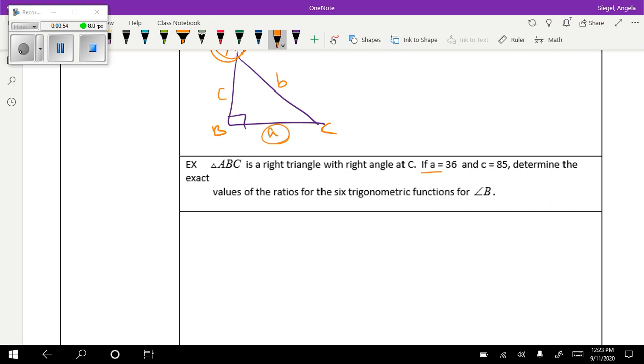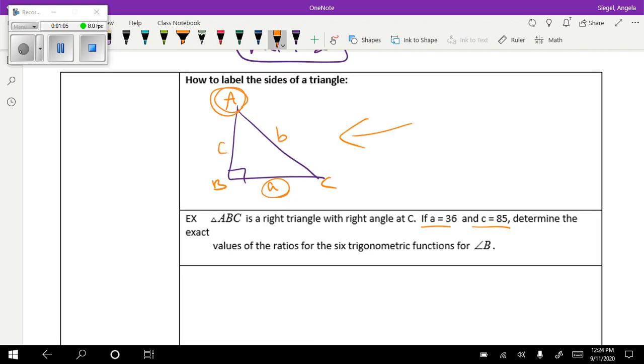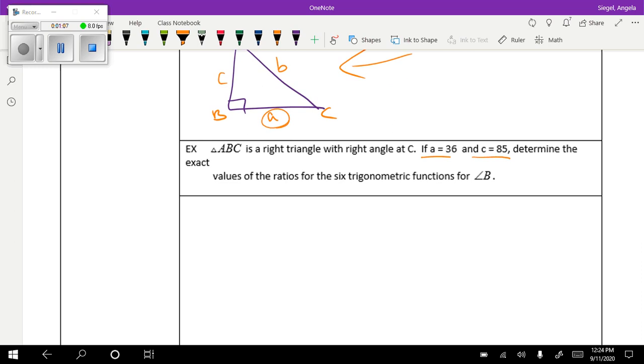When you have a problem like this, it gives you information. It really doesn't matter where you put your letters unless it specifies, but you just need to make sure that it's in the correct form. So let's look at this one. We have a right triangle with the right angle at C. So I just know when I'm starting out, this is big C, this is little c. I'm just going to call this big A, little a, and big B, little b.